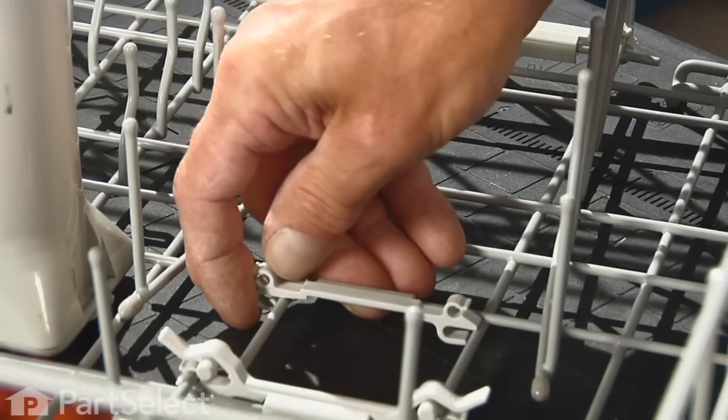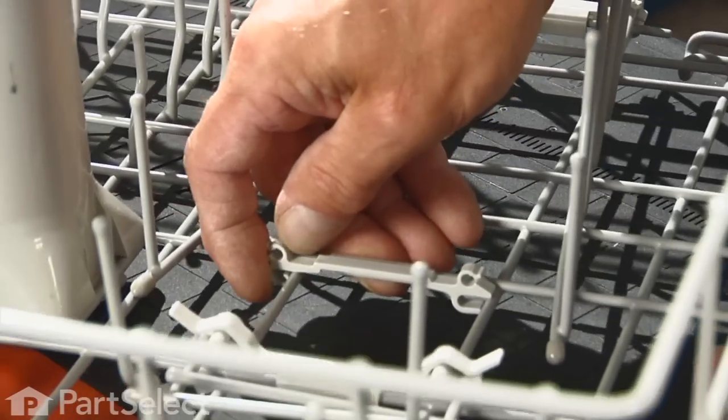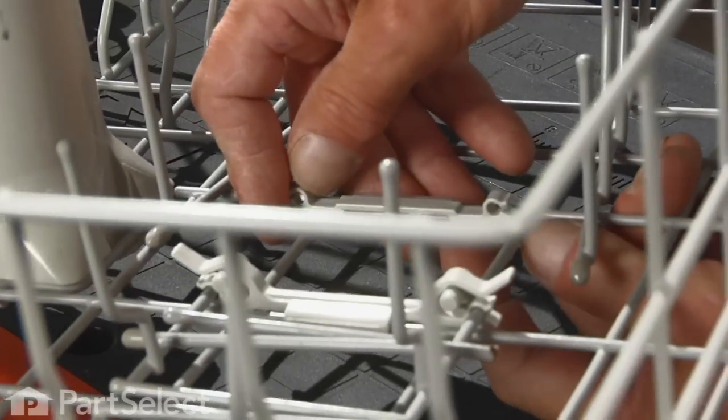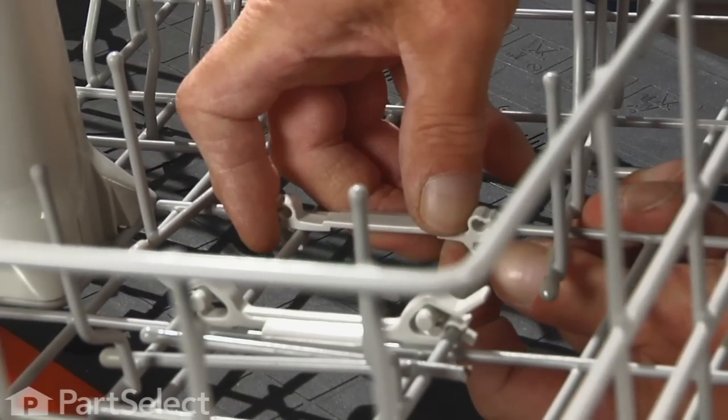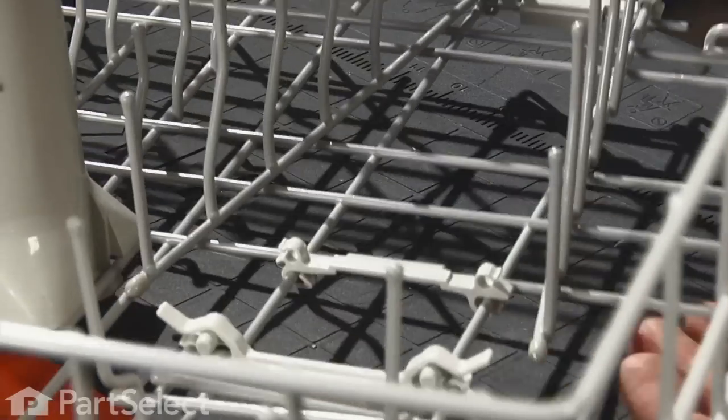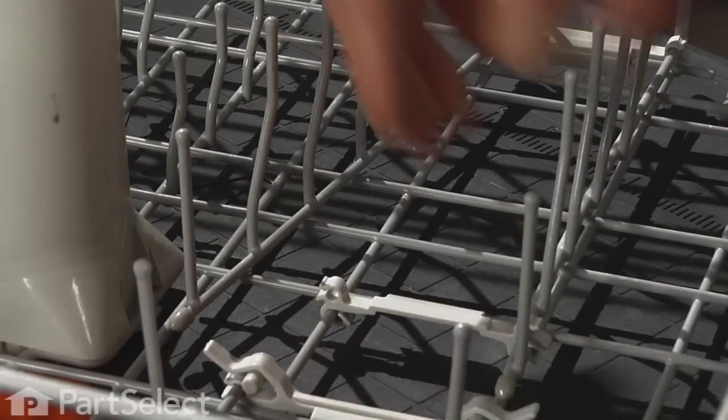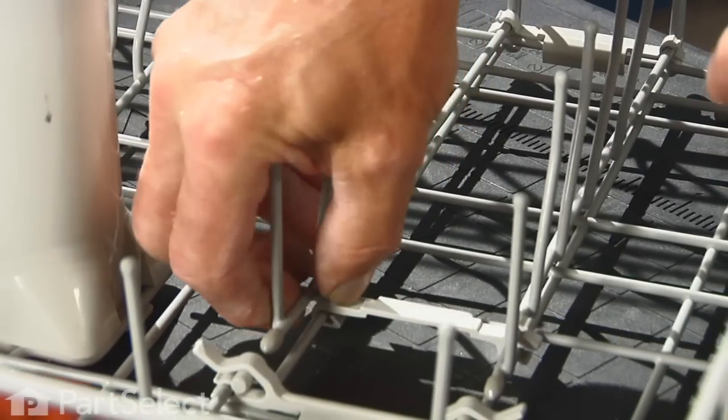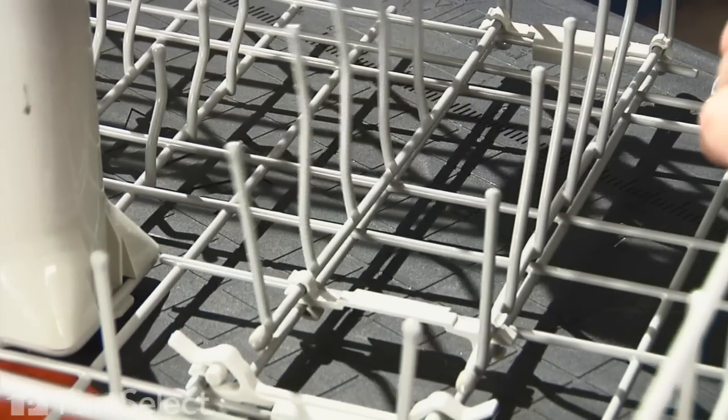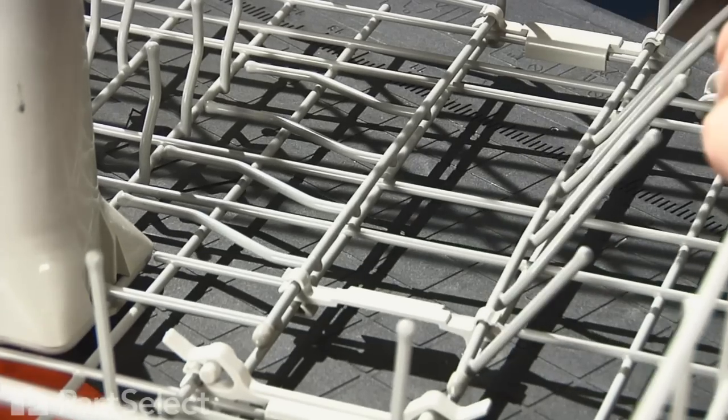Straddles the tine on the bottom, press it forward, the locking tab engages, and we can reinstall the fold-away tines into their pivots.